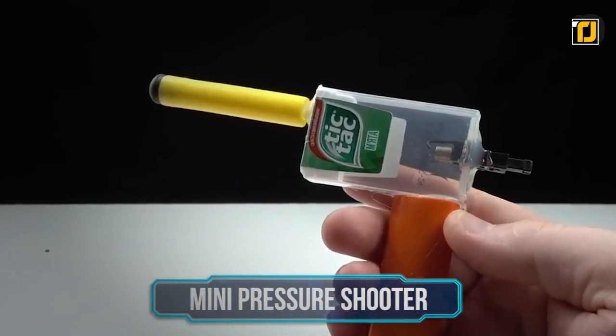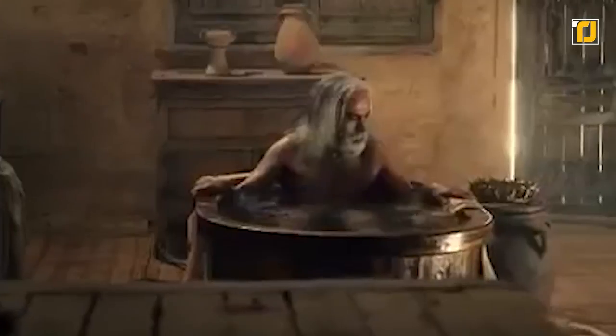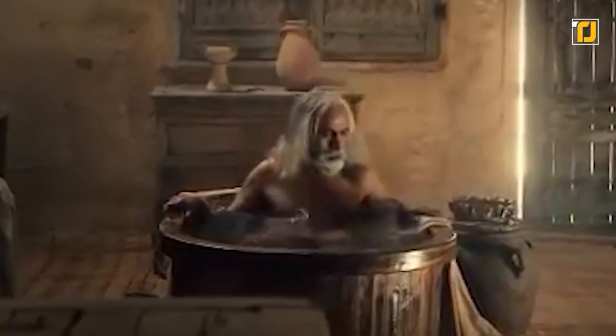Number 4. Mini Pressure Shooter. Archimedes was certainly onto something when his bathtub discovery made him run out naked on the streets of Syracuse. Liquid pressure is a fascinating science topic, which is why this invention is particularly genius for using this to its advantage.